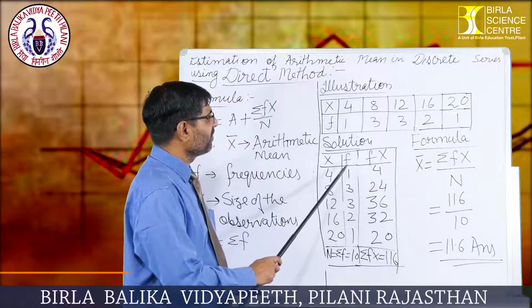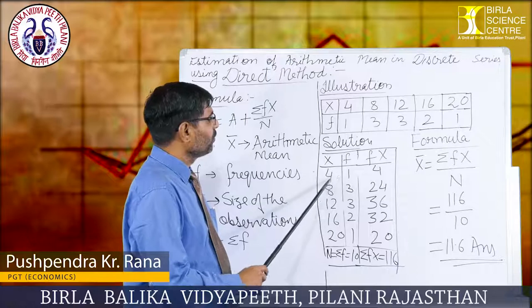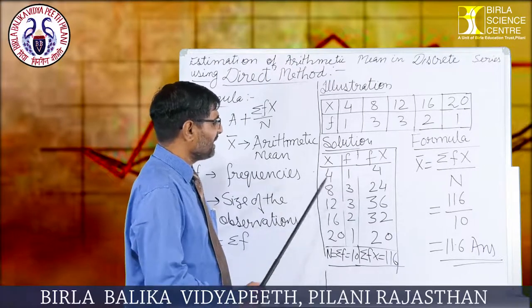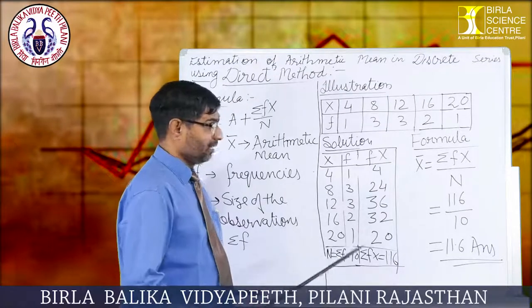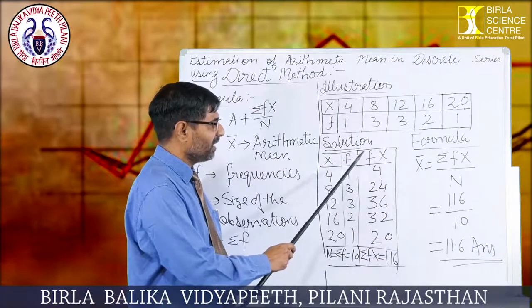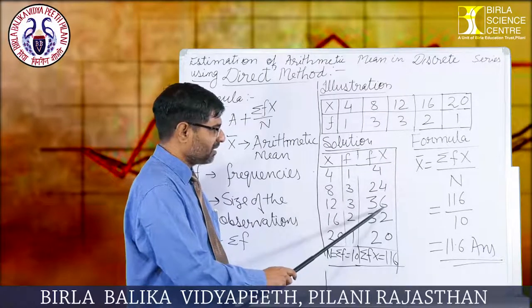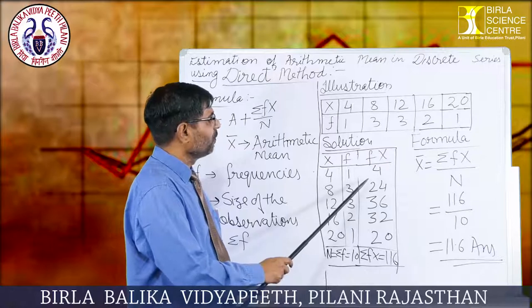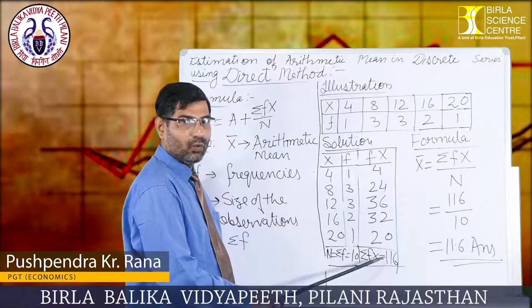The second step is to multiply the frequencies with the size of observation x. So: 4×1 = 4, 8×3 = 24, 12×3 = 36, 16×2 = 32, and 20×1 = 20. The next step is to get the sum total of the product of fx, which gives Σfx = 116.